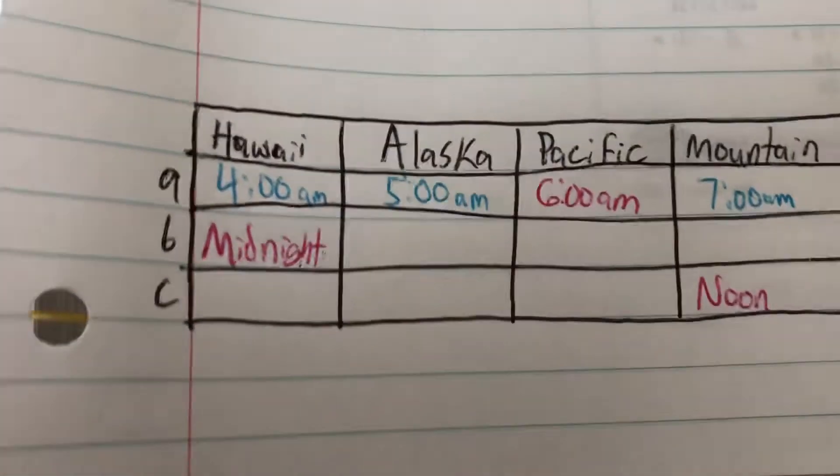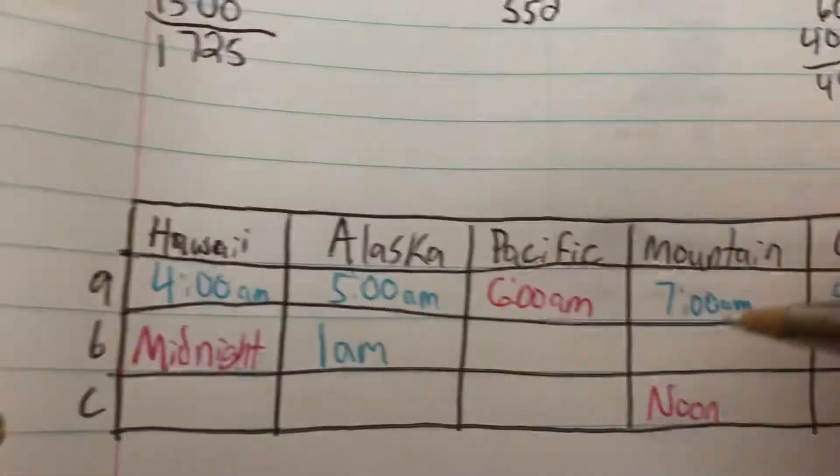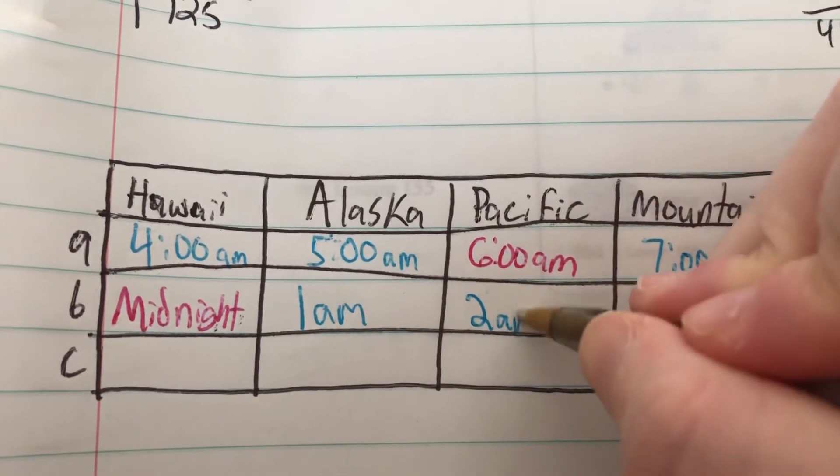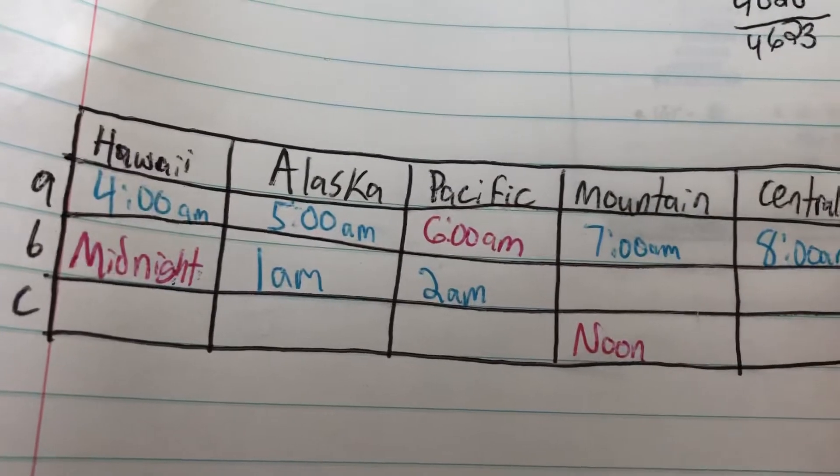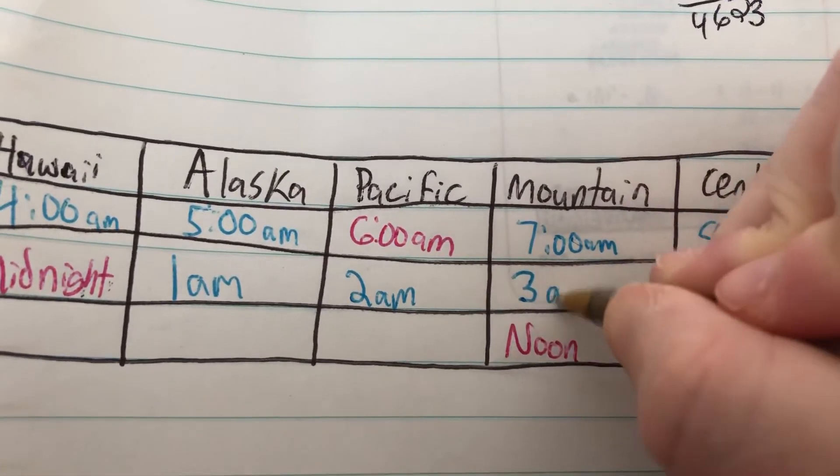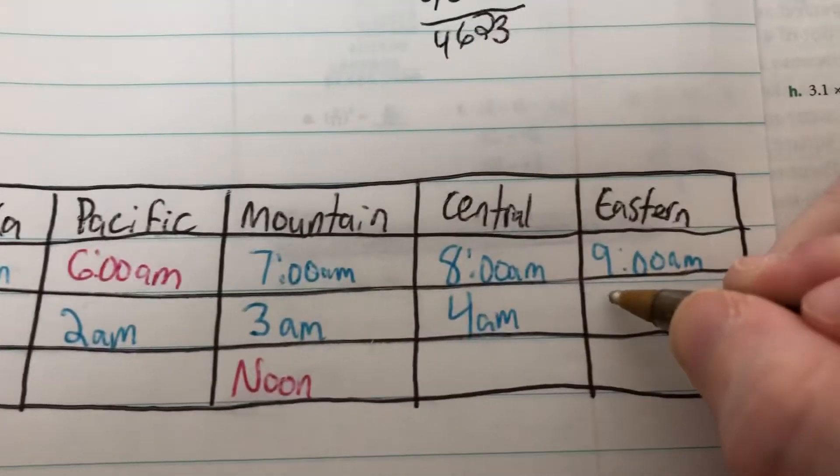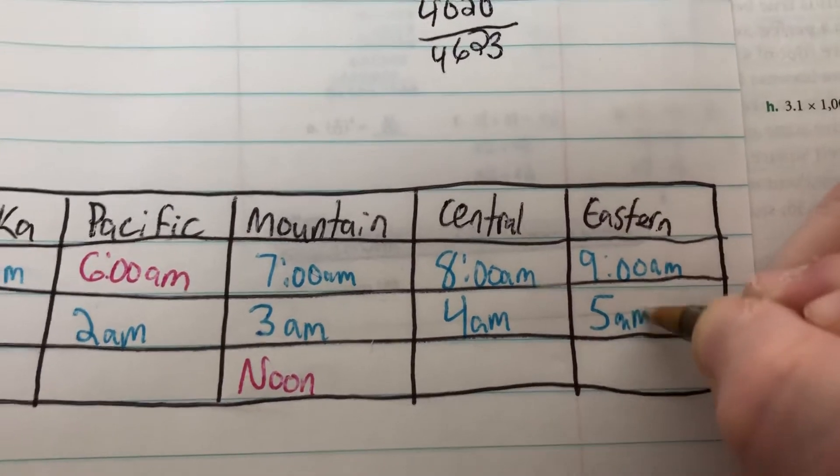For B we have midnight in Hawaii. Well it would be 1 a.m. in Alaska, 2 a.m. in Pacific time zone, 3 a.m. in mountain time zone, 4 a.m. in Central and 5 a.m. in Eastern.